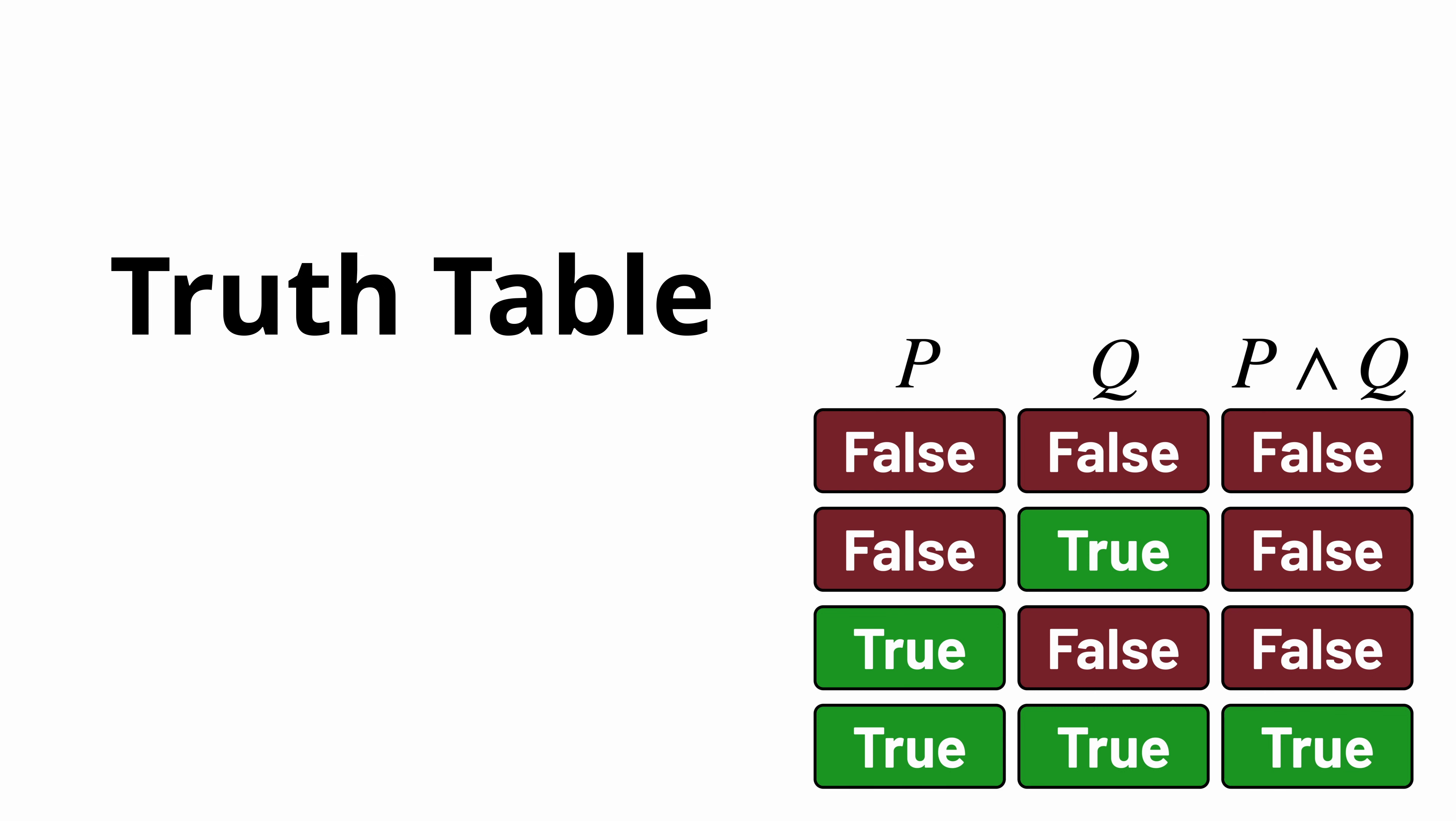But for the formula P OR Q, three of the four combinations of values allow the formula as a whole to hold true. And only in the case where P AND Q are both false is the formula false. Notice that for the formula P OR Q, it's true if P is true, or if Q is true, or if both are true.